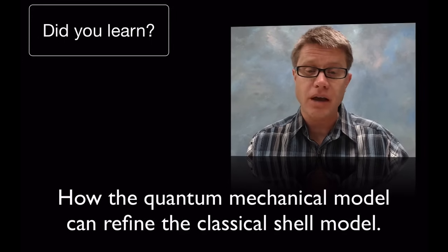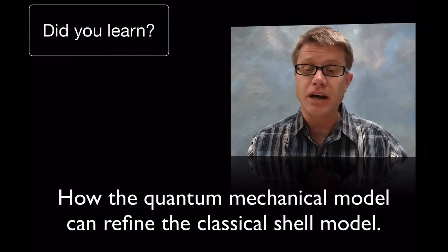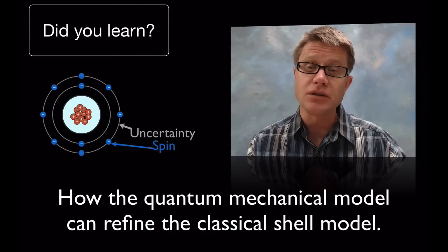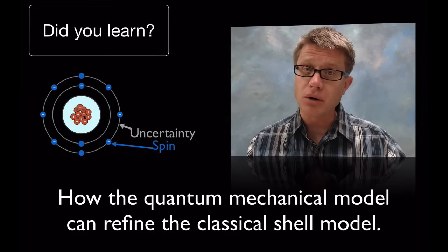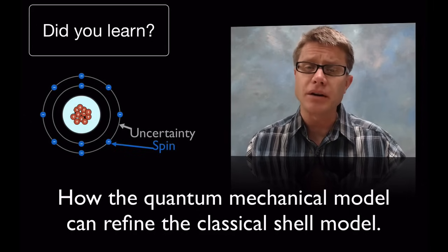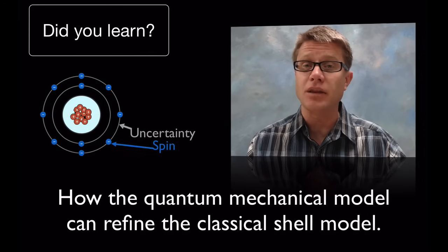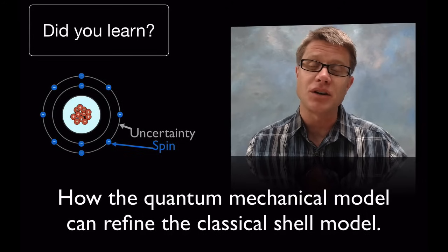And so did you learn how the quantum mechanical model can refine the classical shell model? Well, I would point you to these two things: uncertainty of the electrons and the spin. And it's not like we throw out the shell model. It's just that we're getting better and better models of what an atom looks like based on the data that we're getting. We'll talk about that in the next video. But I hope that was helpful.